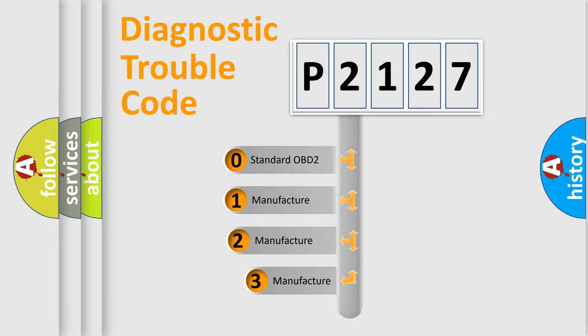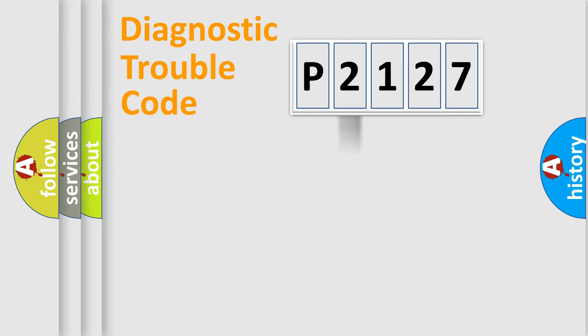If the second character is expressed as zero, it is a standardized error. In the case of numbers 1, 2, 3, it is a more prestigious expression of the car-specific error.